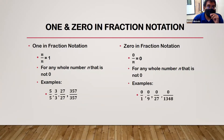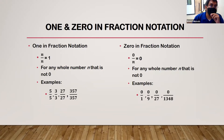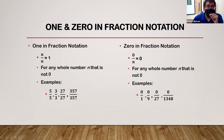One in fraction notation: a number over itself will equal one. So if you have five over five, that would equal one. This works for any whole number that is not zero. We have examples like five over five, three over three, 27 over 27, and 357 over 357 — these fractions all equal one. If you divide a number into itself, it equals one.